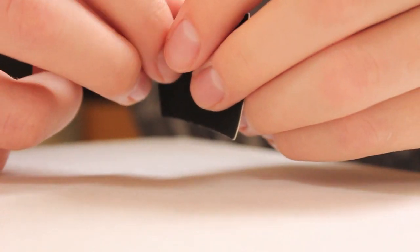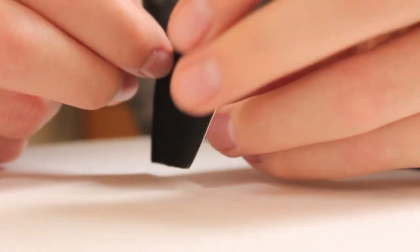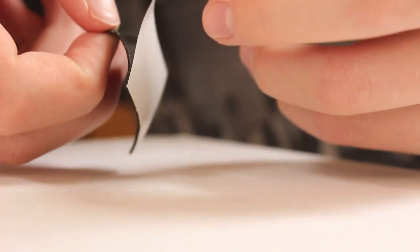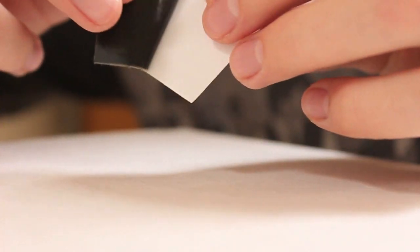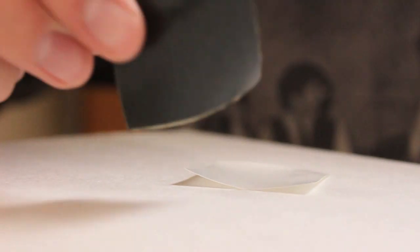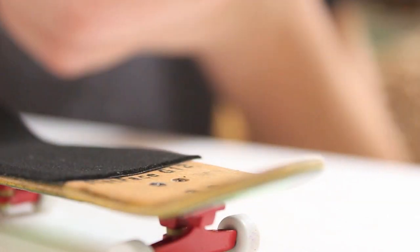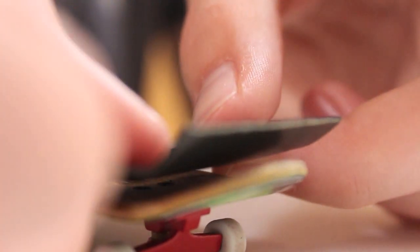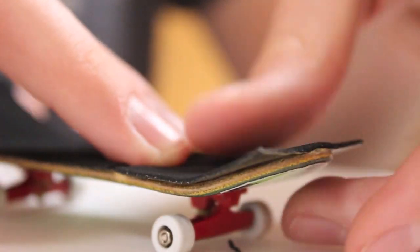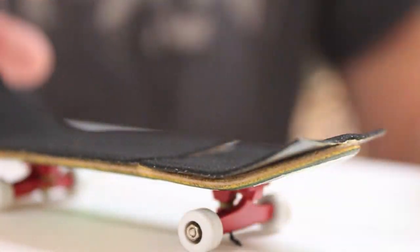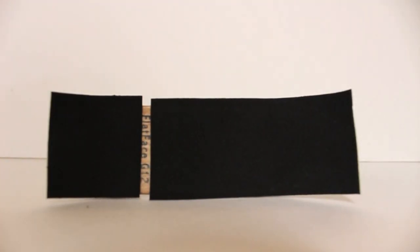Then repeat this process with the other part of the grip tape that we've cut. This is what your fingerboard should look like.